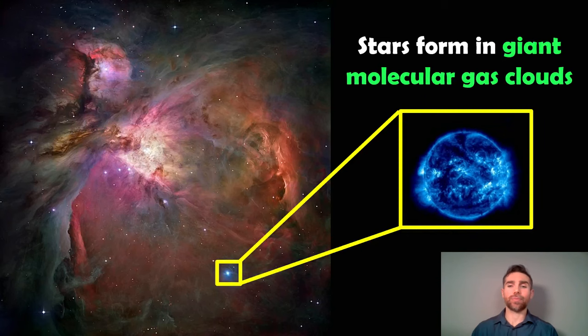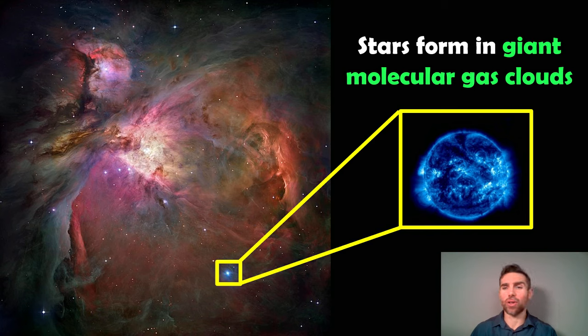When we look at star formation, the general idea is that they form in these giant molecular gas clouds. This is the Orion Nebula. If you look carefully and zoom in on some of these stars, you see some of them are blue. The blue stars are quite young—